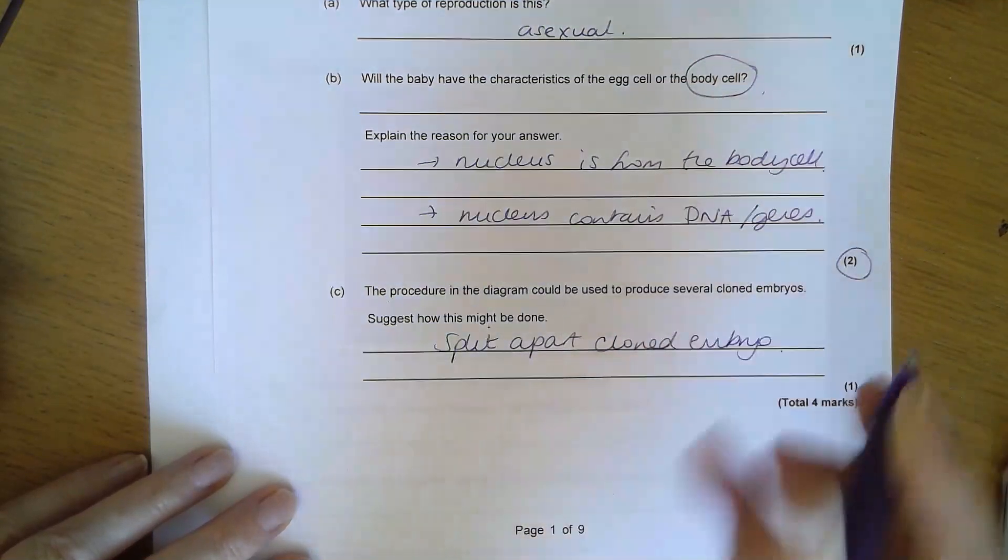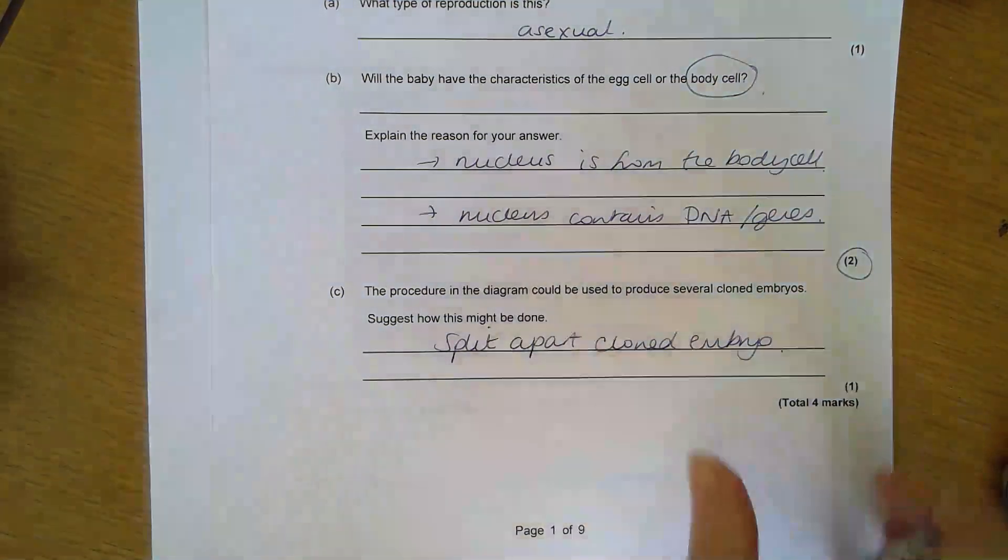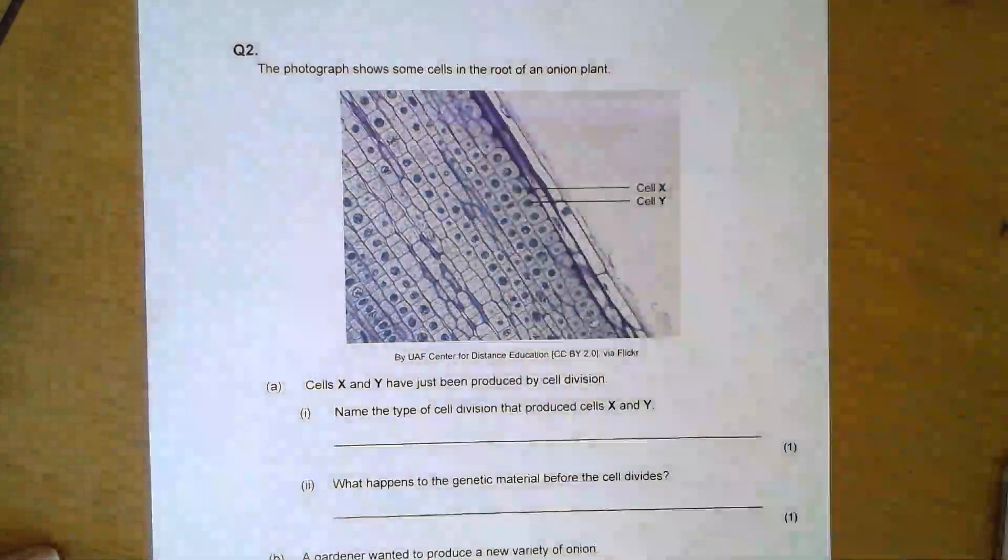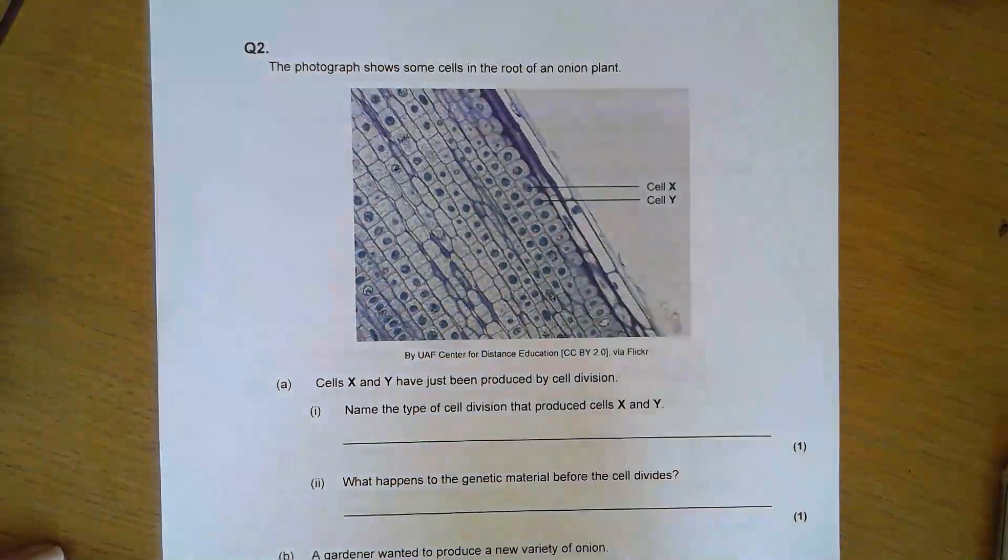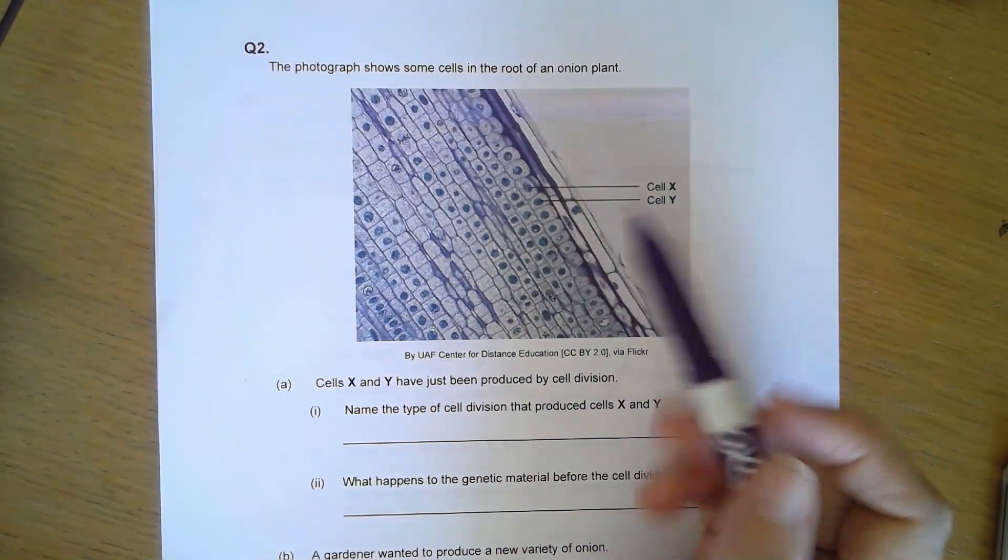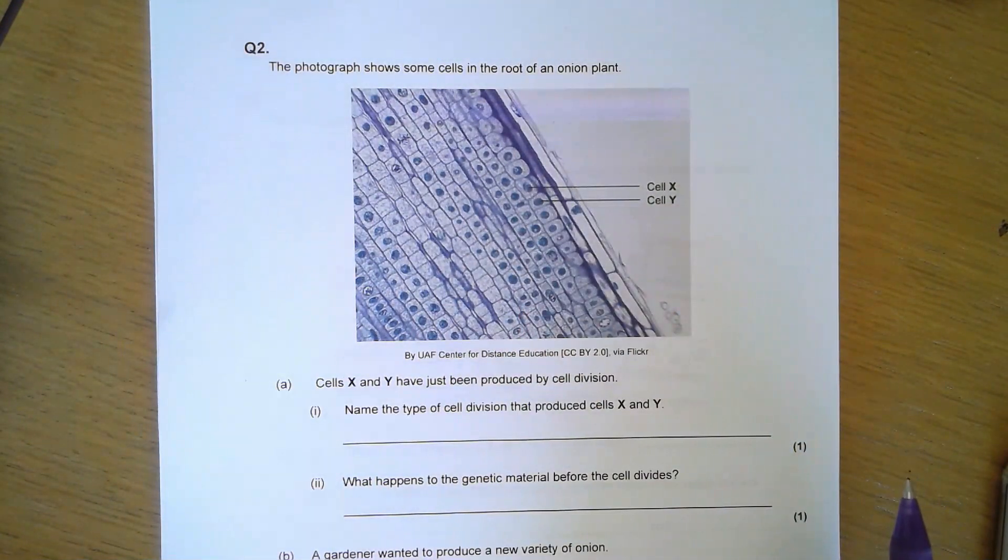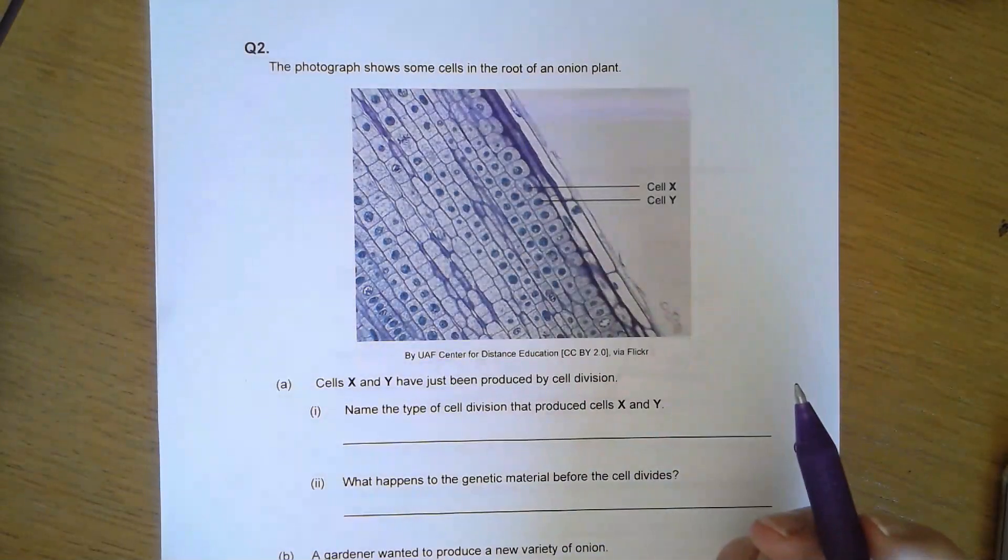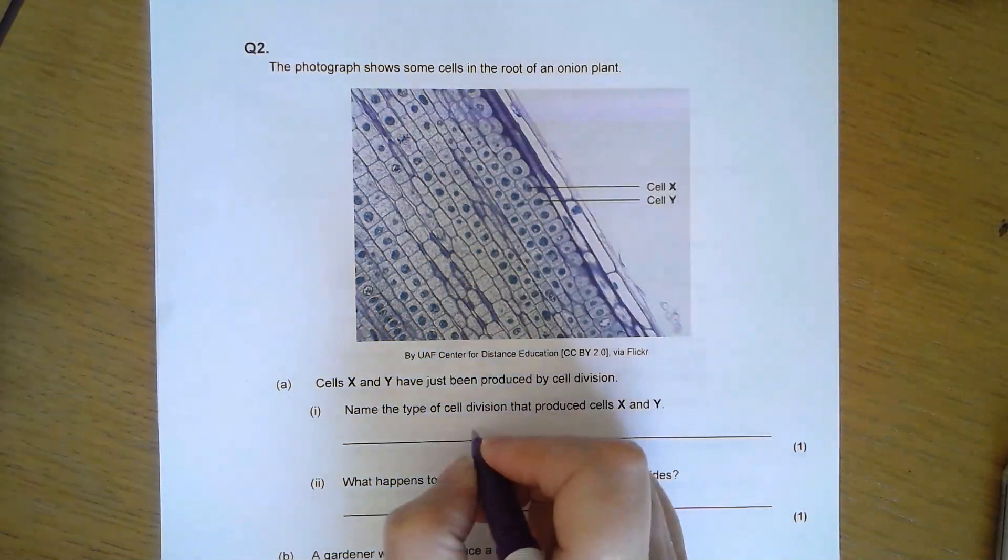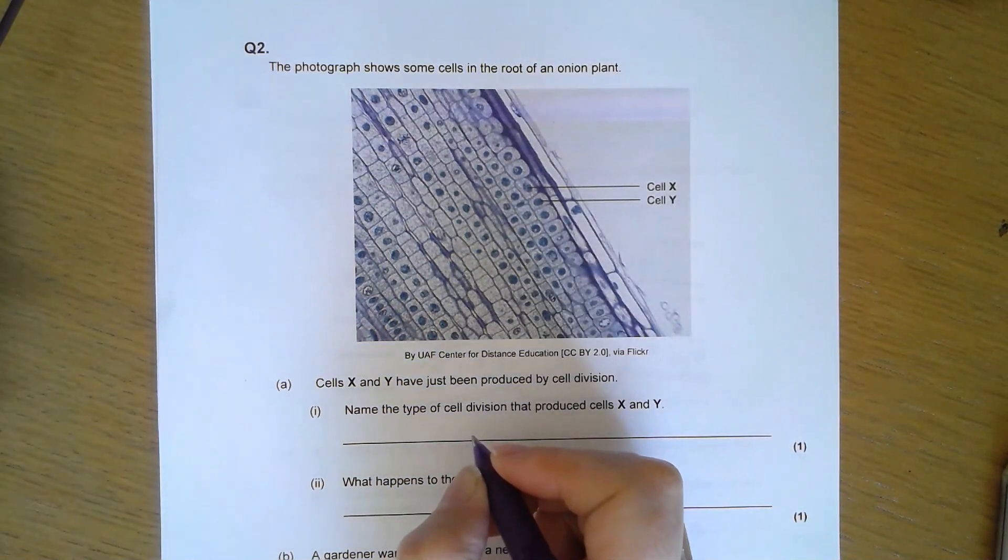Question two. I've got some cells from the root of an onion plant and X and Y have just been produced by cell division. What sort of cell division? It can't be meiosis because these are not gametes, they're in the root of an onion, so therefore it must be mitosis.